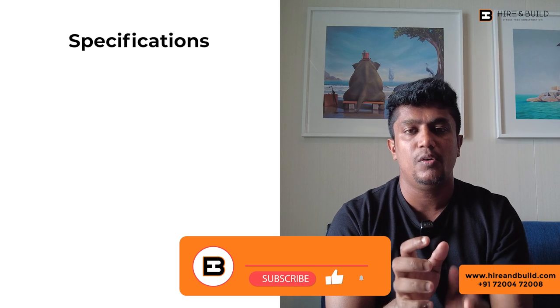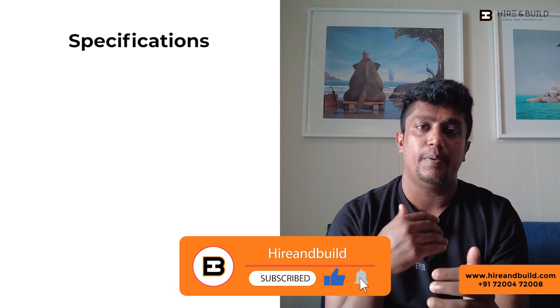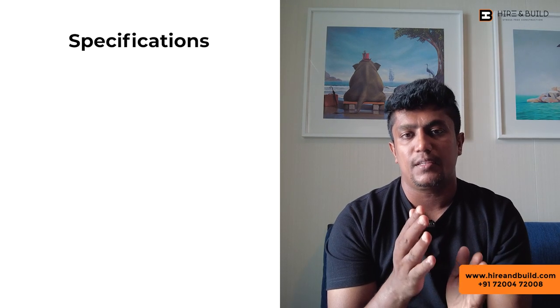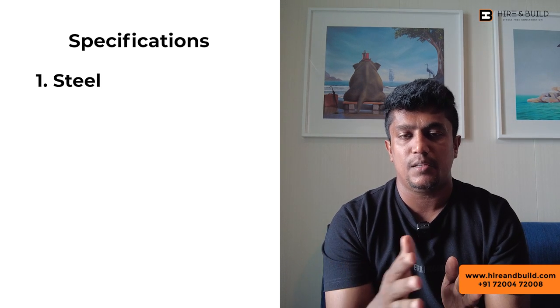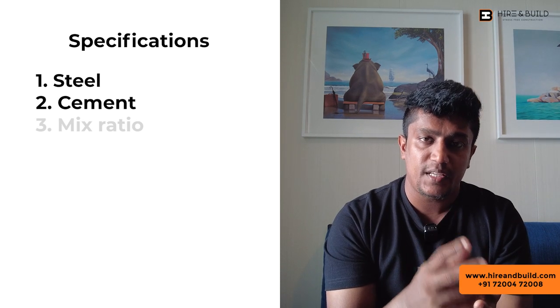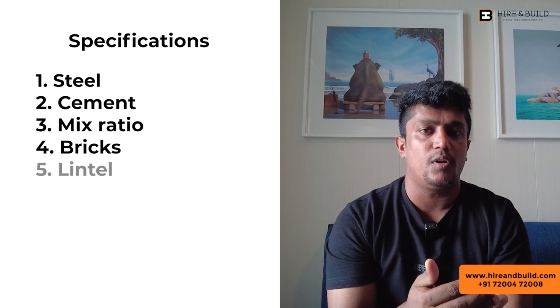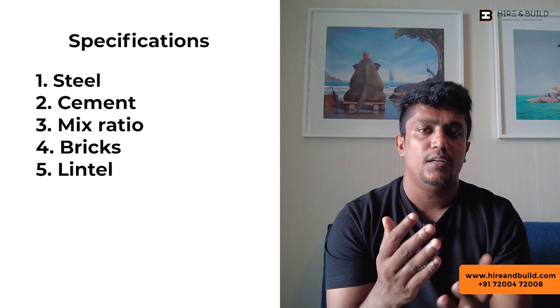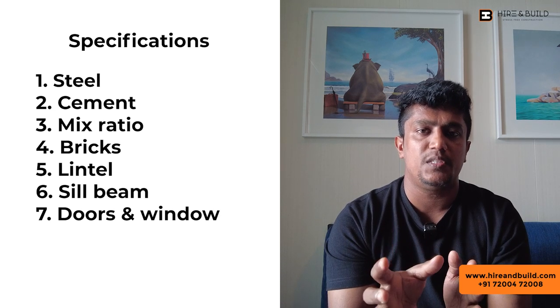Next, we have to look at the building specifications and the builder. The specifications are very important hidden cost factors. For example, a builder may use Tata Steel or JSW ARS steel. How do we use the steel? How do we use the cement? What is the mix ratio? How do we use the bricks? How do we use the lintel — through lintel, cut lintel, sill beam? What about doors and windows? Understanding all the specifications is critical.